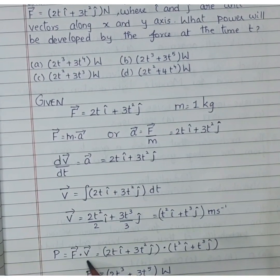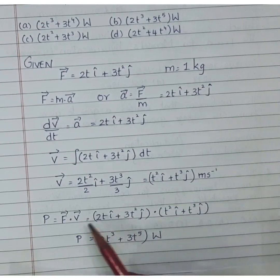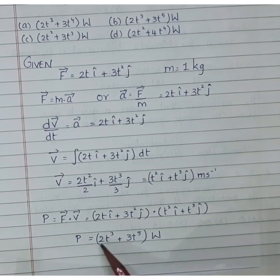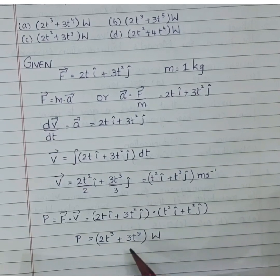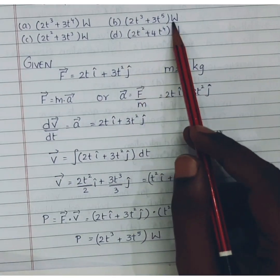Now we know the force vector and the velocity vector. So power is equal to F dot V. Just find the dot product of F vector and V vector similar to the previous sum. So I will be getting P as 2t cube plus 3t to the power 5 watt. So option B is the correct answer.